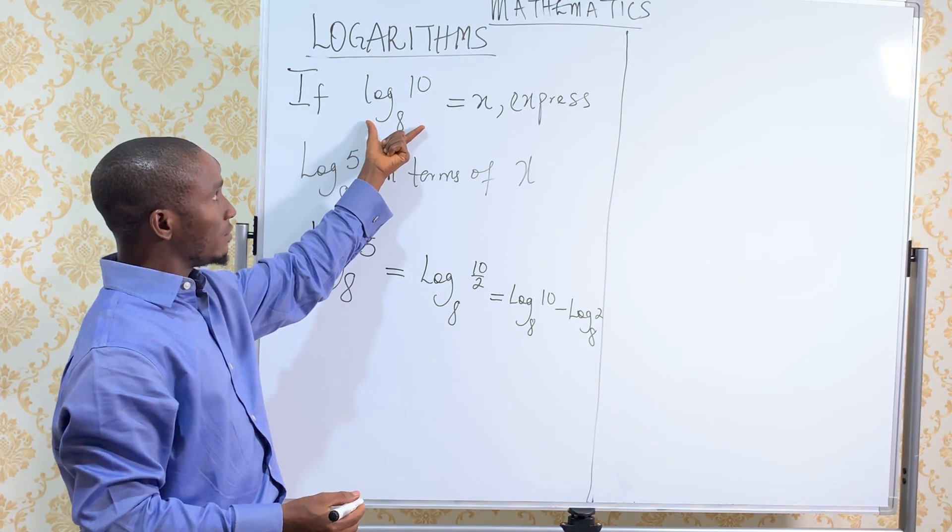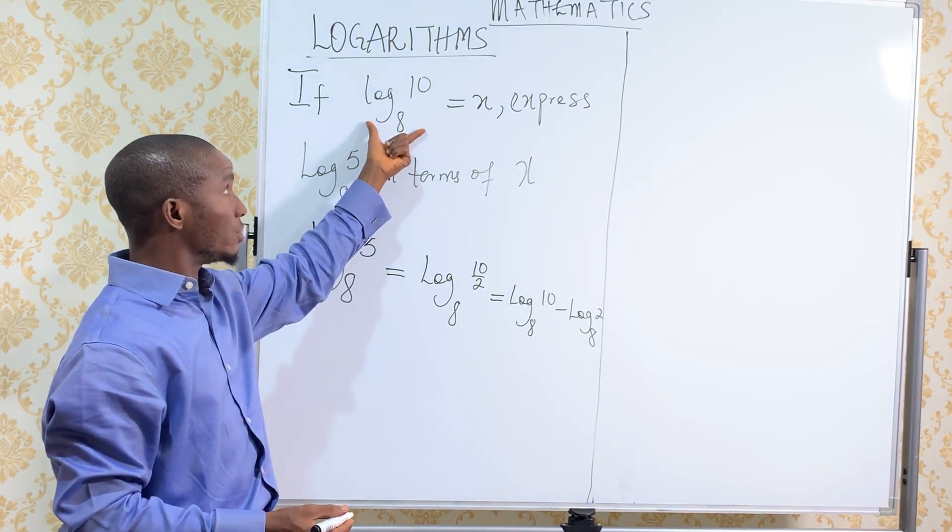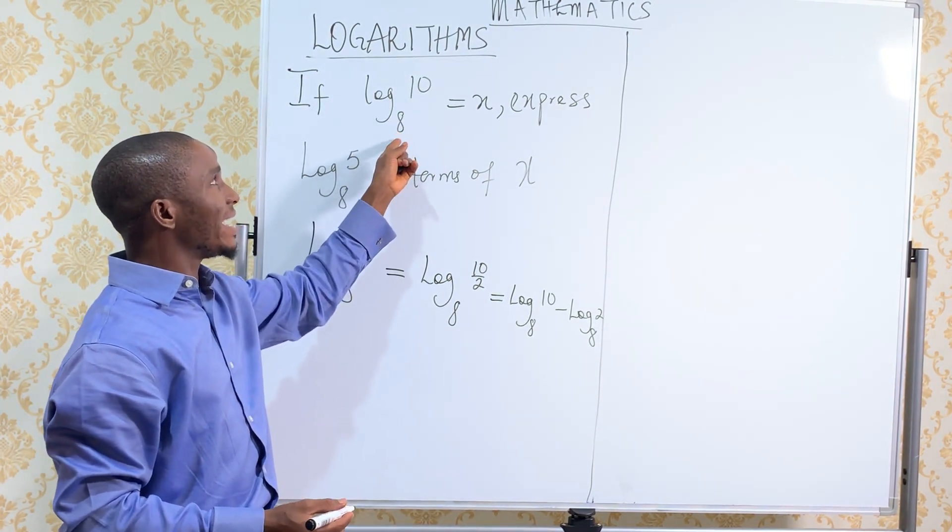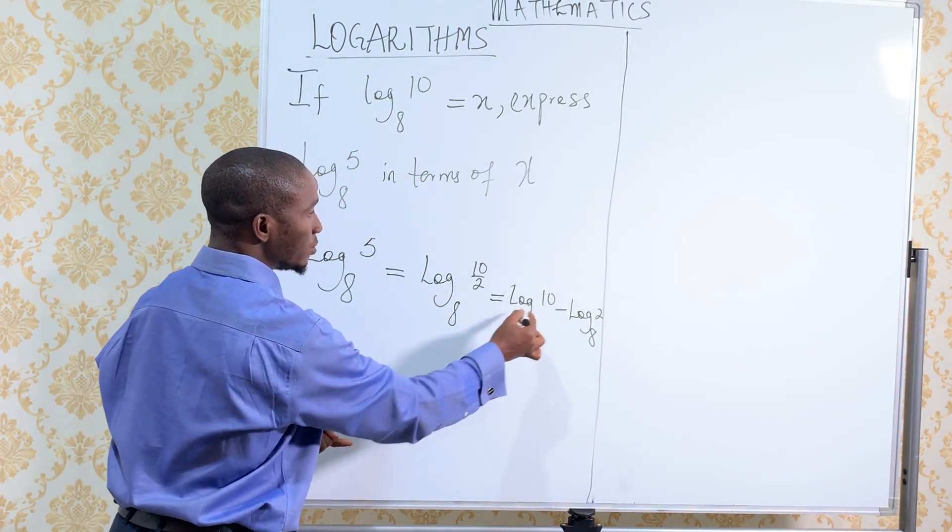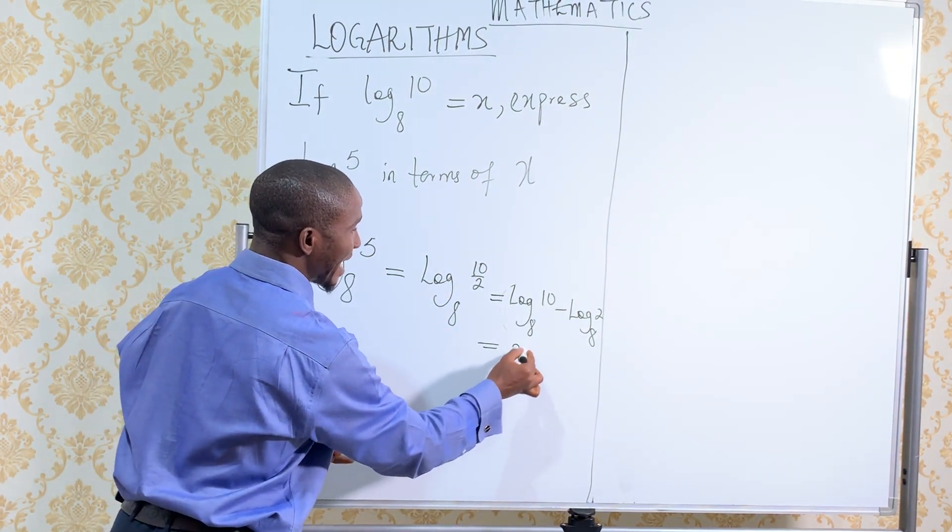Now, when you look at what we are given earlier from the question, log 10 base 8 equals x. So that means we know this. The whole log of this has been given to us to be x. So this is x.